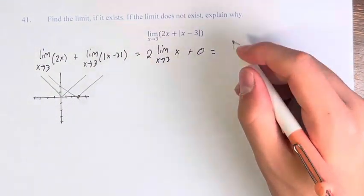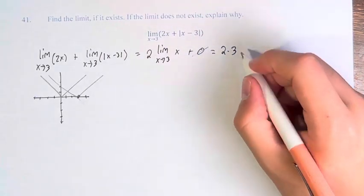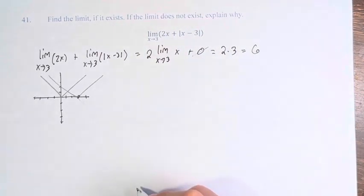The limit as x approaches 3 of x is 3, so this is 2 times 3, and then plus 0 doesn't do anything, obviously. So the value of the limit is 6.